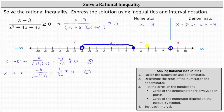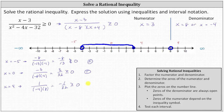Now we test x equals four. When x equals four, the numerator is one. The denominator is four minus eight, which is negative four, times four plus four, which is eight. This gives us negative one thirty-second greater than or equal to zero, which is false. A negative fraction is never greater than or equal to zero, so the entire interval does not satisfy the rational inequality.